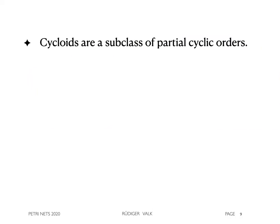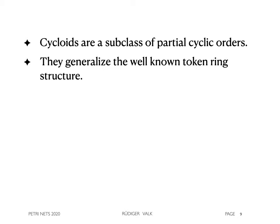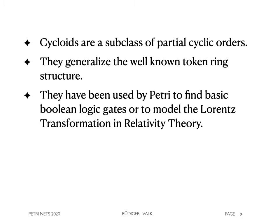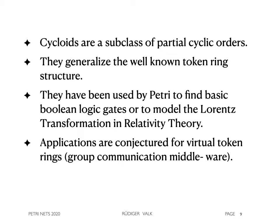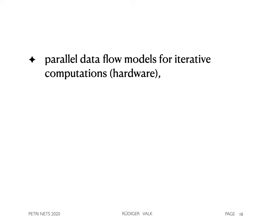Generally speaking, cycloids are a subclass of partial cyclic orders. They generalize the well-known token ring structure. They have been used by Petrie to find basic electronic gates or to model the Lorentz transformation in relativity theory. Applications are conjectured for virtual token rings in group communications of middleware, for parallel data flow models for iterative computations in hardware, combination of hardware and software, and stream processing and machine learning applications.